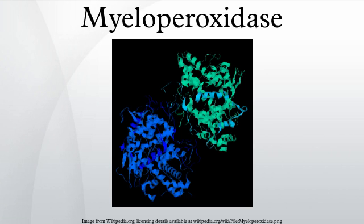Structure: the 150 kDa MPO protein is a cationic homodimer consisting of two 15 kDa light chains and two variable-weight glycosylated heavy chains, bound to a prosthetic heme group. The light chains are glycosylated and contain the modified iron protoporphyrin-9 active site.